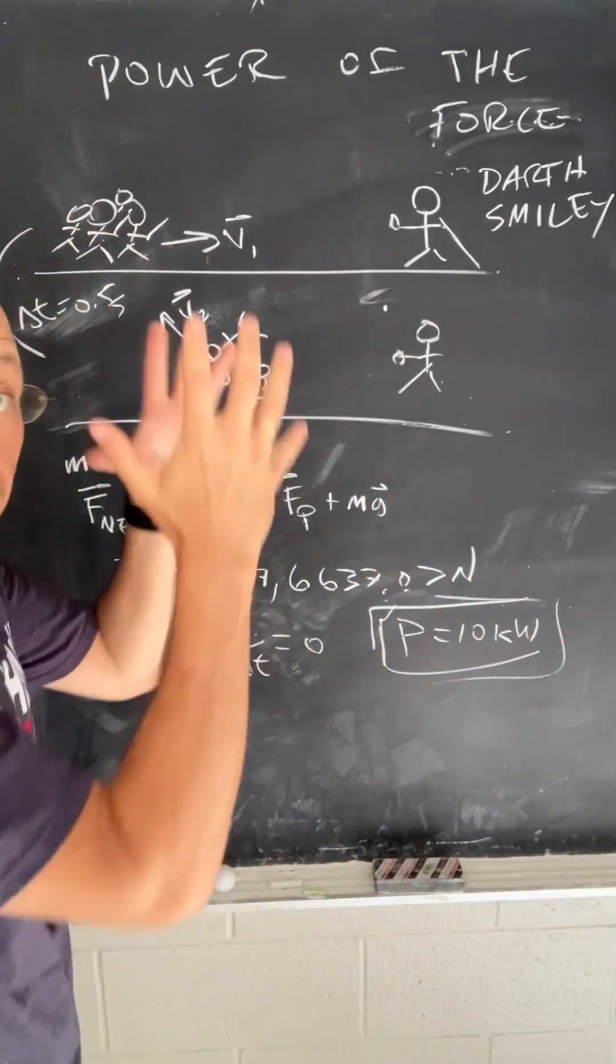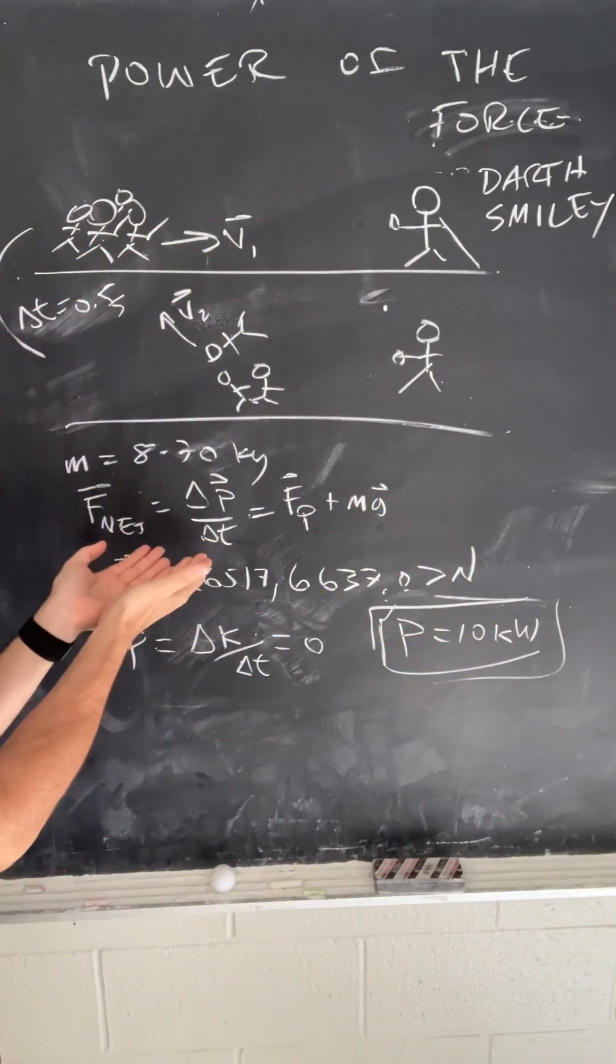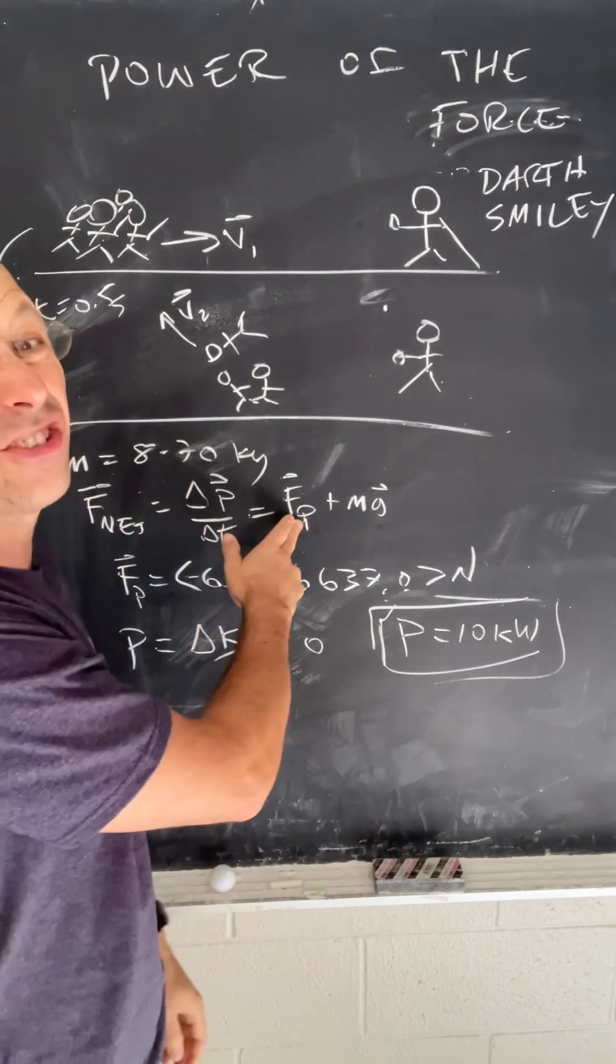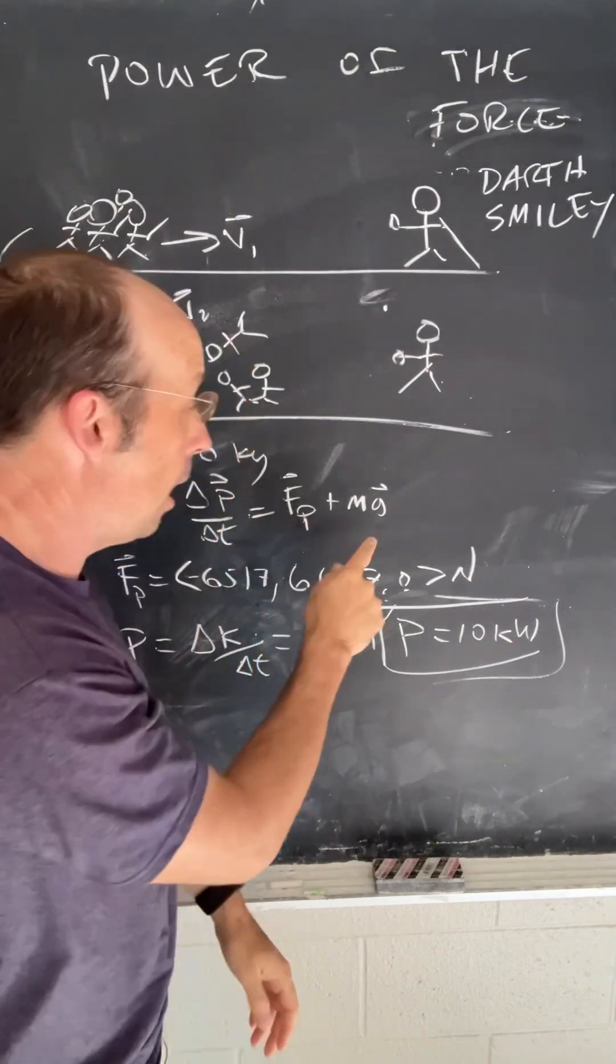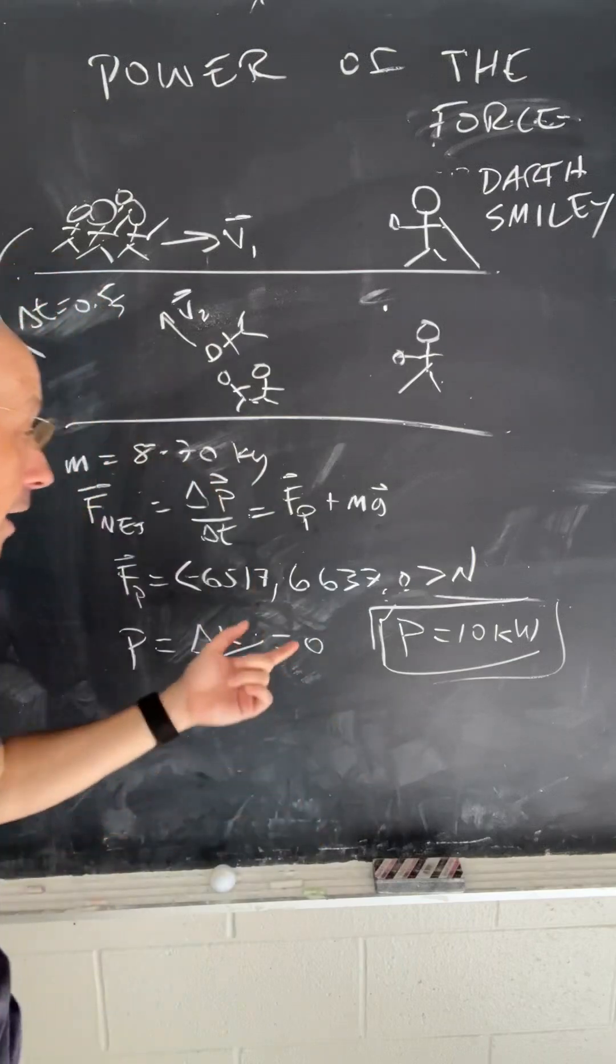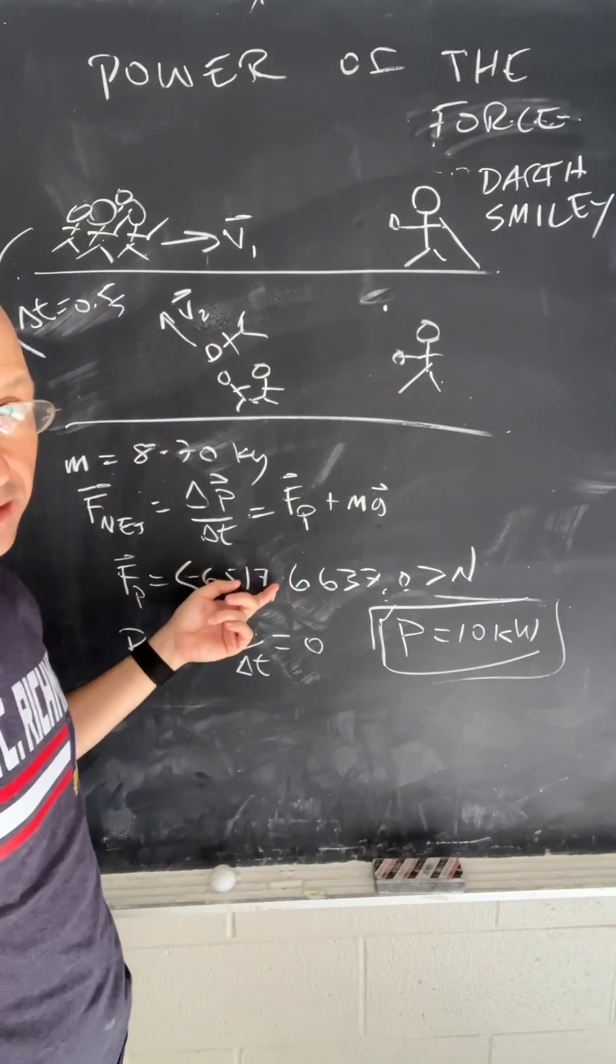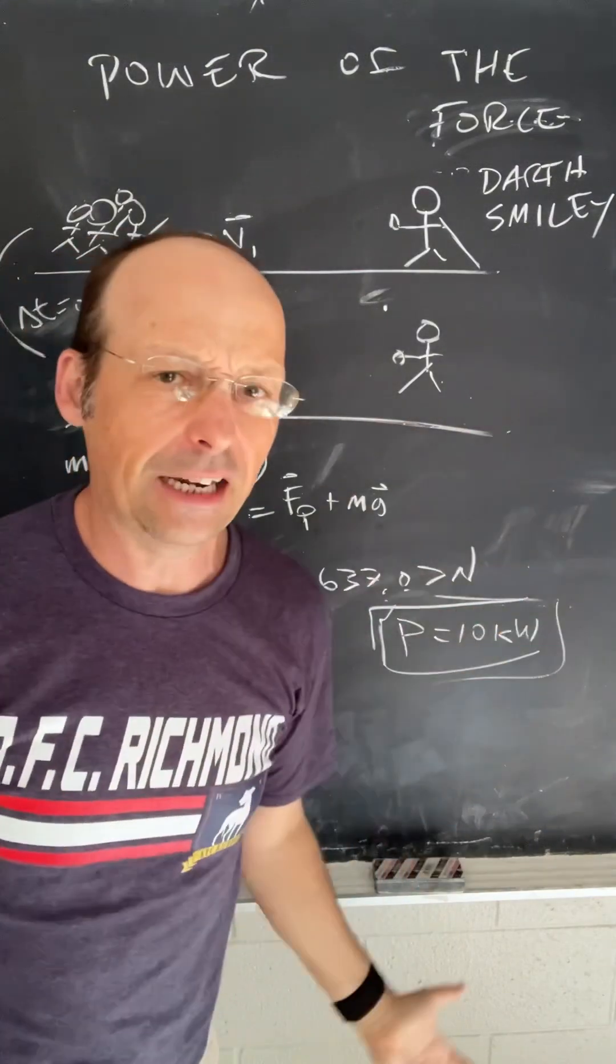And the final velocity, I can use the change in momentum to calculate the force. Now, that's actually the sum of the force from the push plus the gravitational force. And that gives me a force of this, which if you find the magnitude, it's around 9,000 newtons.